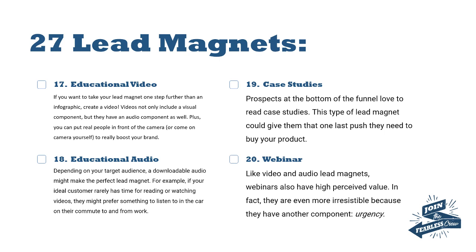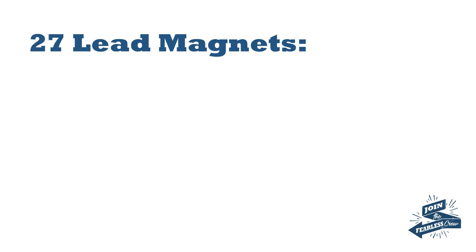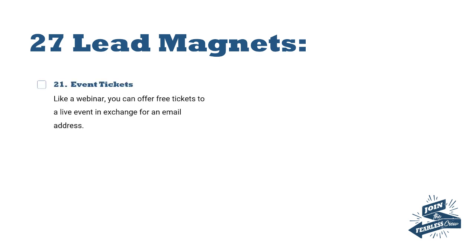Number twenty is a webinar — typically 30 to 60 minutes in length. Webinars appear to have a higher perceived value than other formats, and you can get viewers to engage during it and introduce urgency. All other lead magnets tend to be on-demand, whereas a webinar might be something you put on once and it's never seen again — no recording. So if you've got some kind of secret sauce to deliver, or you're doing a product launch, a webinar is a great option.